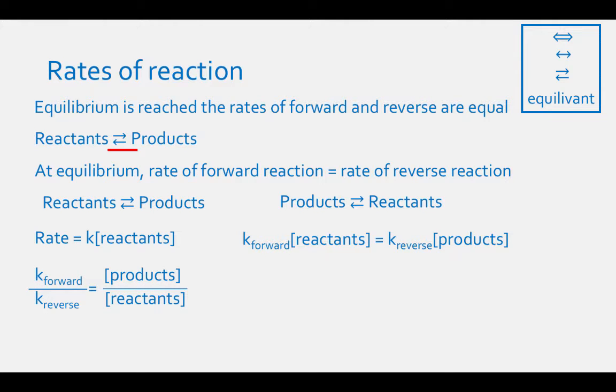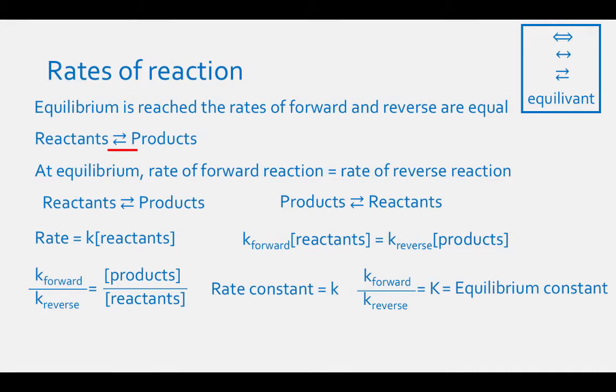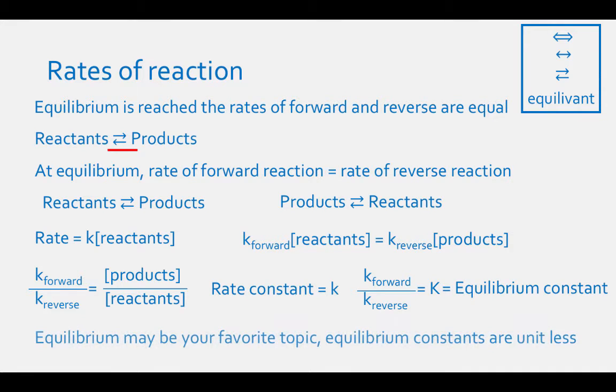We can rearrange the equation: the rate constant of the forward reaction divided by the rate constant of the reverse reaction equals the concentration of the products divided by the concentration of the reactants. The rate constant is represented by a lowercase k, but the ratio of the forward rate constant to the reverse rate constant is represented by a capital K. Capital K is given the special name of equilibrium constant. Equilibrium constants have no units.